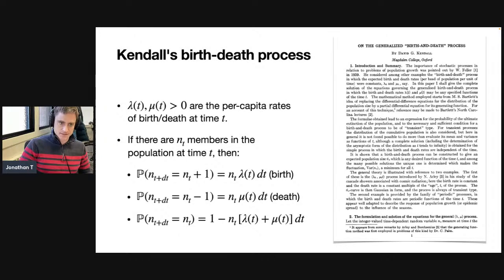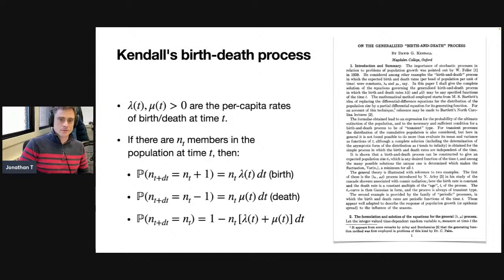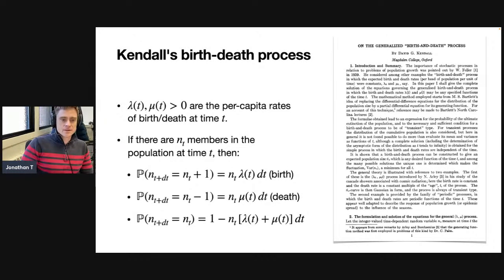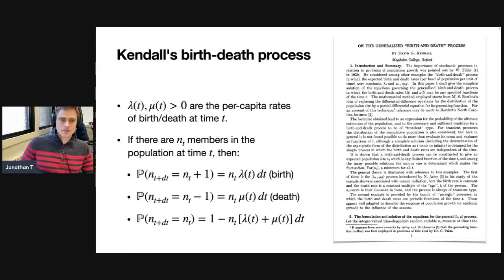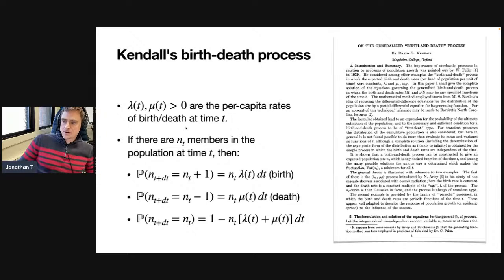This foundational stochastic process goes back to a classic paper by Kendall in the 1940s. The basic idea is you have two functions, lambda of t and mu of t — non-negative time functions giving the per capita rates of birth and death over time. If there are n_t members at time t, then the rate at which the population increases by one is n_t times lambda(t), and similarly the population dies at rate n_t times mu(t). This can be used as a prior on phylogenetic trees — you get what's called a phylogenetic birth-death process, viewing surviving lineages as members of a population that bifurcate or go extinct at particular rates.